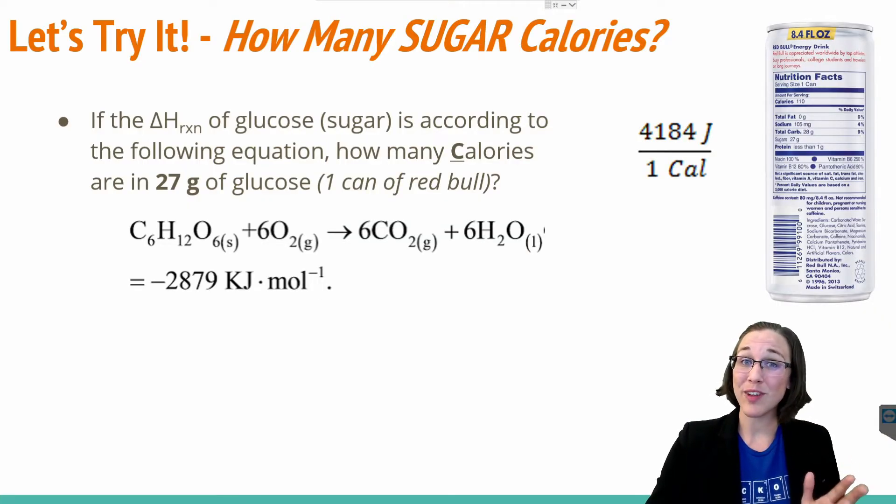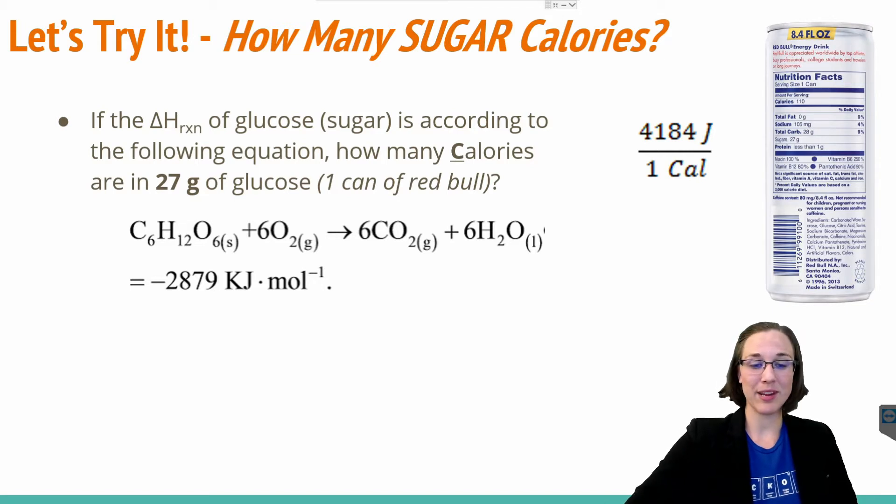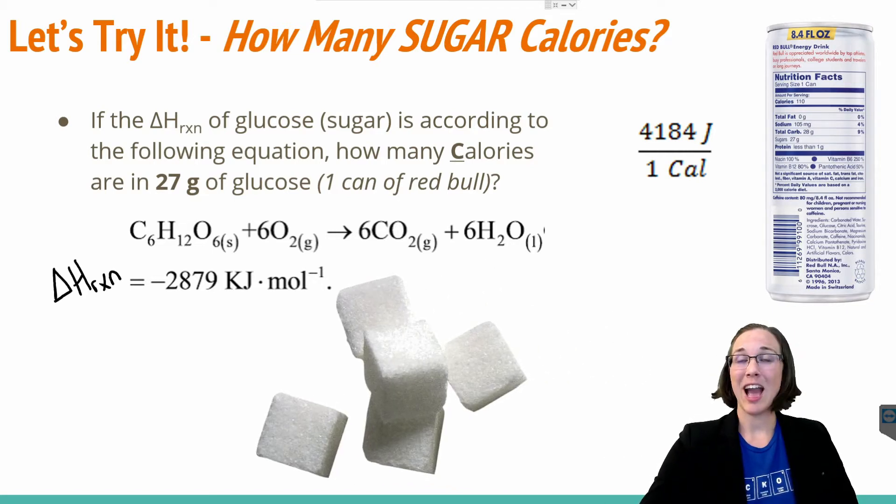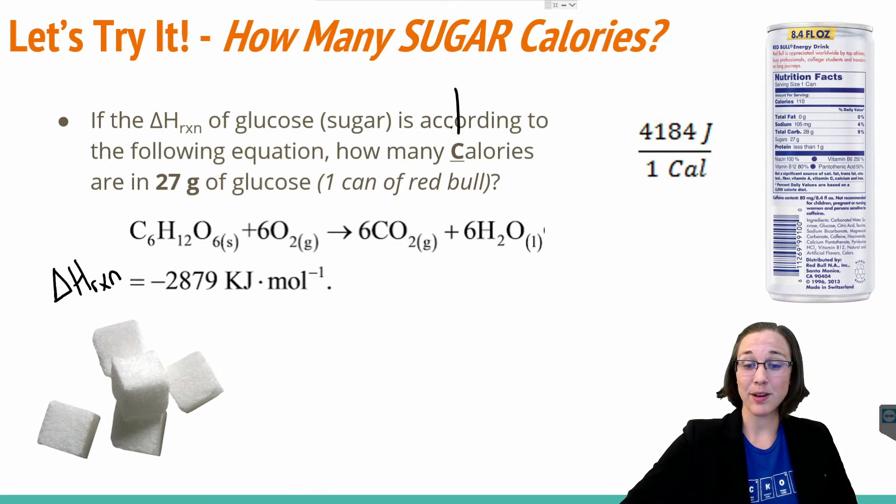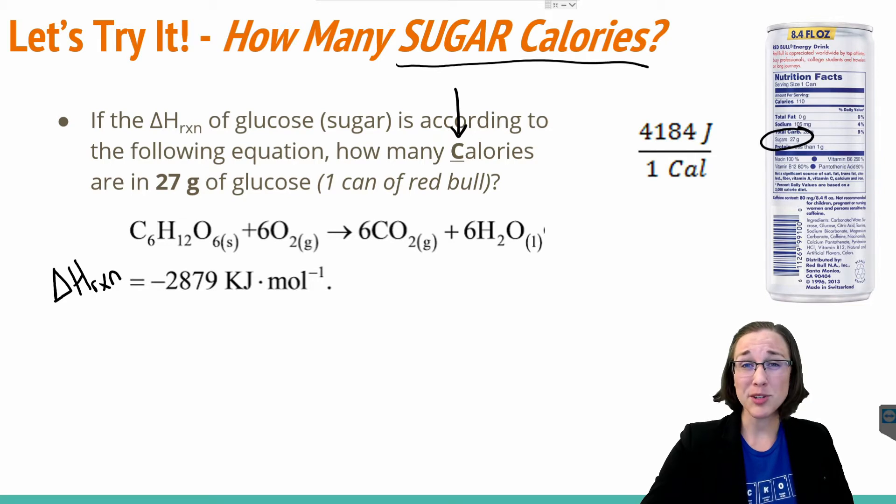Now that we know what the conversion factors for a calorie is, let's go ahead and solve the question we opened this video with. If we had the delta H of the reaction as follows for glucose, which is just sugar, how many calories, that's uppercase C, are in 27 grams of glucose, i.e. one can of Red Bull. Now why am I being so specific with this sugar calories? Well, as you know, food has many different kinds of chemicals in it. Another unit of energy that we find in food is starch. Additionally, fat can also have energy in it.